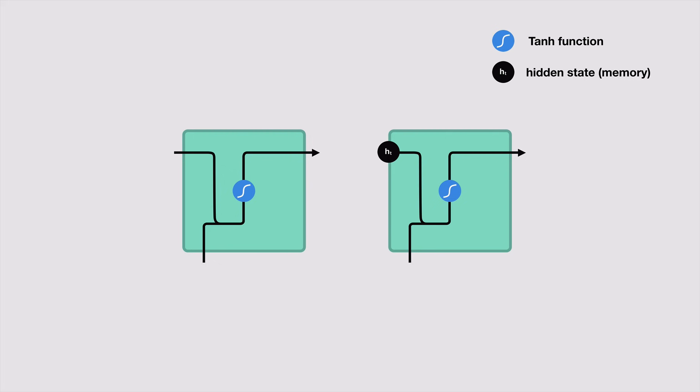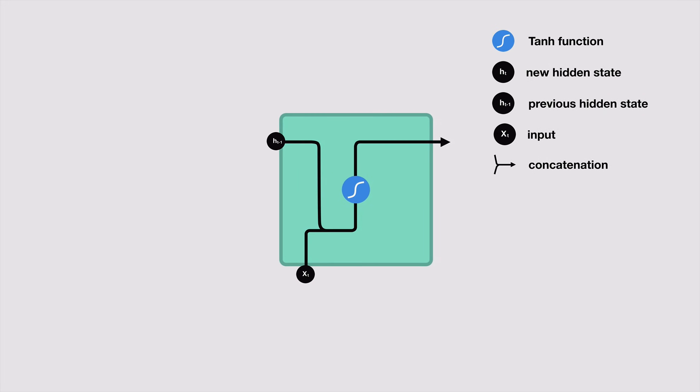Let's zoom into the cell of an RNN to see how the hidden state is calculated. First, the input and the previous hidden state are combined to form a vector. That vector now has information on the current input and the previous inputs. The vector goes through the tanh activation, and the output is the new hidden state, or the memory of the network.